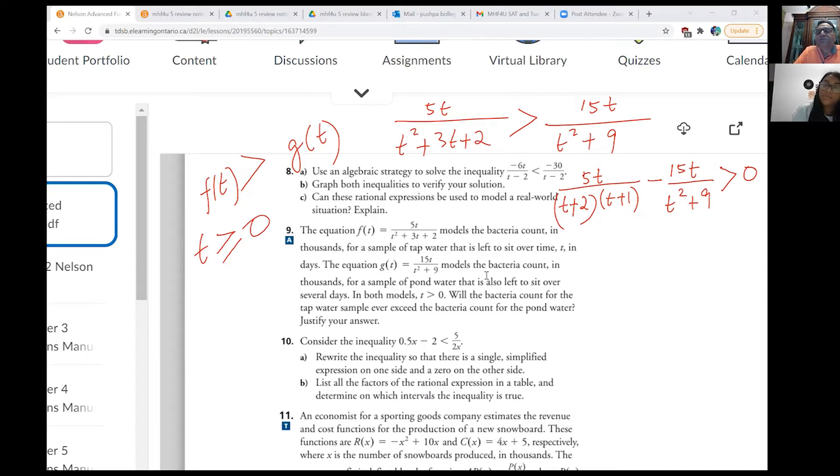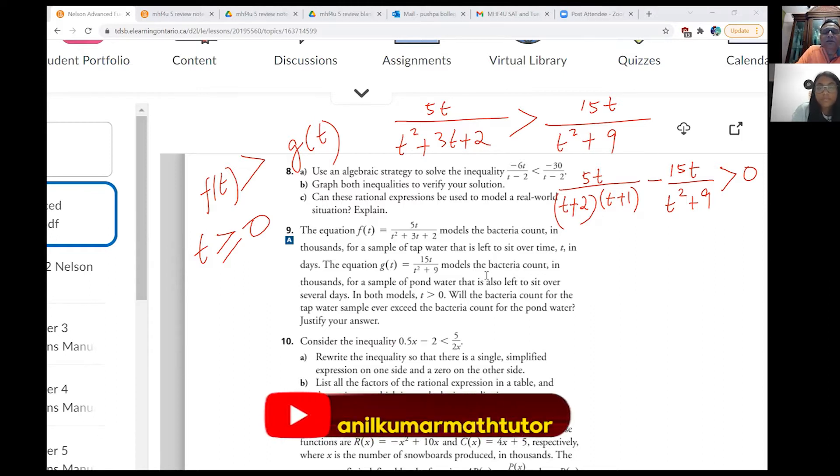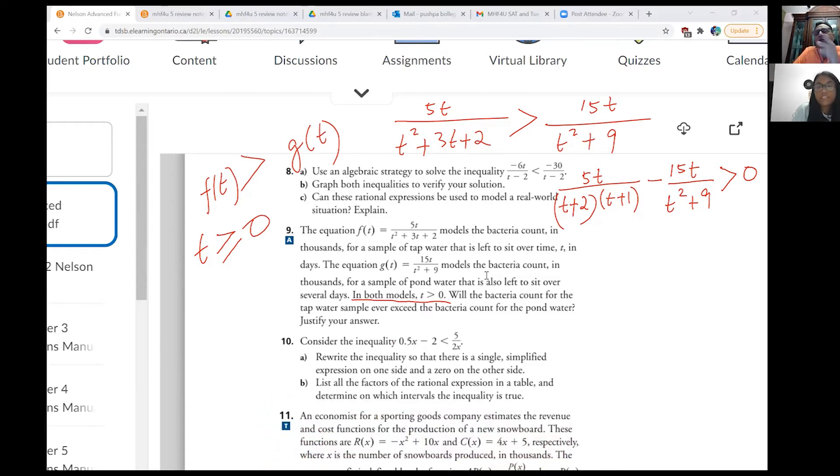Now, to begin with, let us take some estimate just to answer this communication question. This is an application and communication question. If I put t equals to 0, in that case, both are same. Do you see that? t equals to 0 gives me both the things 0. So initially, we are saying that this equation, what is the bacteria count? They have the same bacteria count at t equals to 0, which is 0. But they both model t greater than 0. So this equation is only valid for t greater than 0. Correct. Yeah.